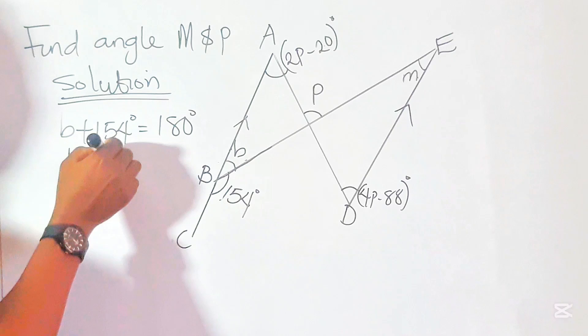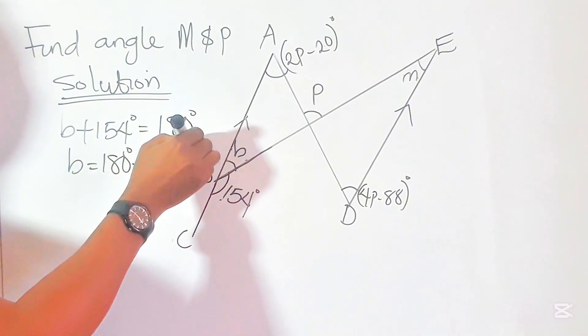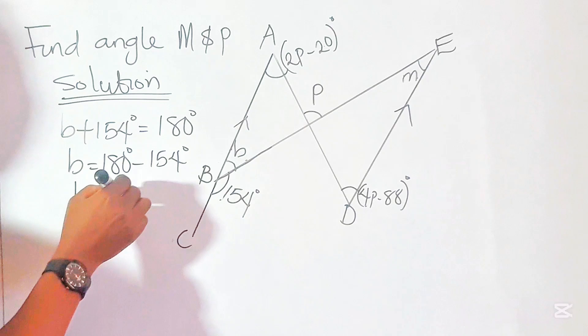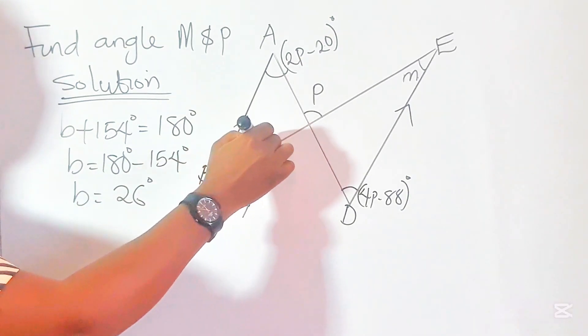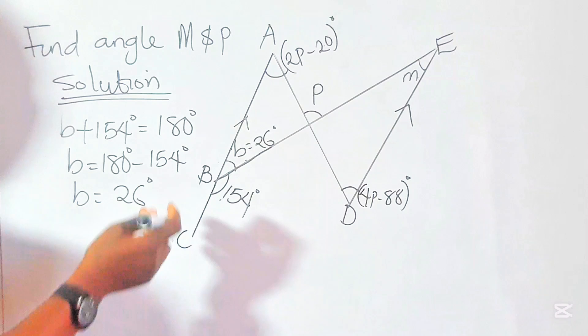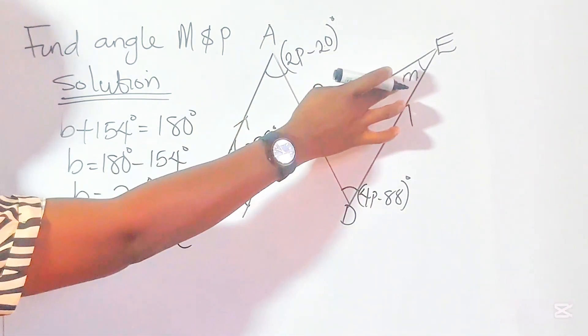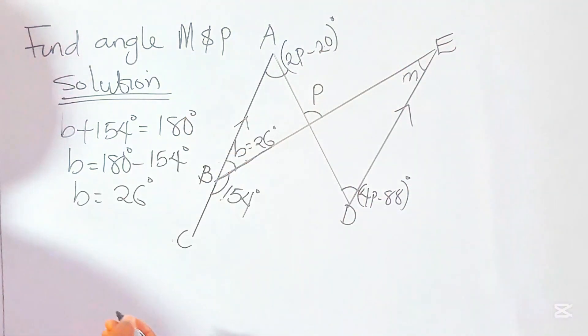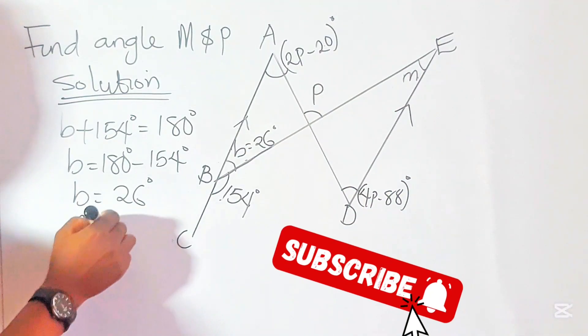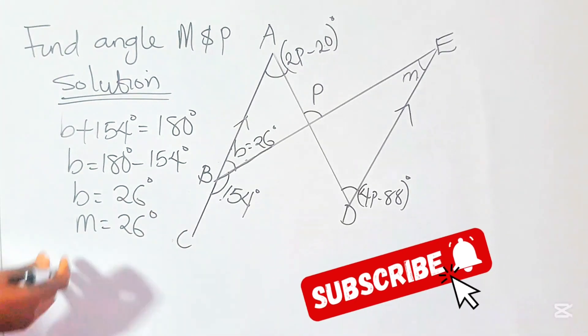Therefore, the value of B equals 180 degrees minus 154 degrees. The value of B now becomes 26 degrees. So this angle here is 26 degrees. If angle B here is 26 degrees, angle M is also 26 degrees because they are alternate angles.